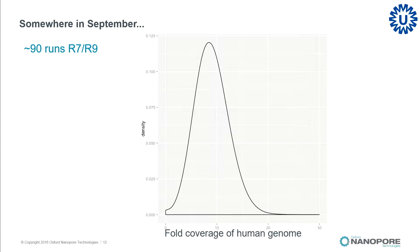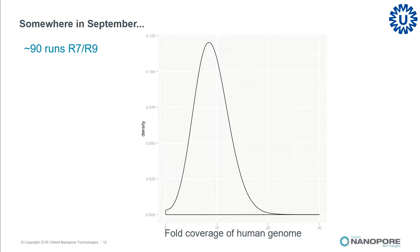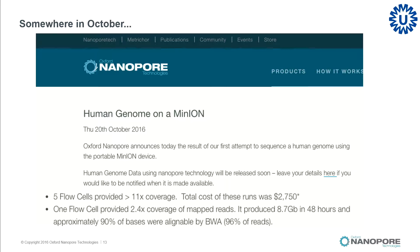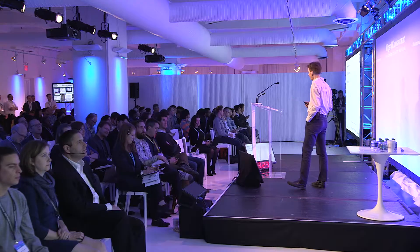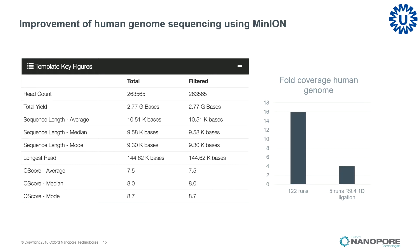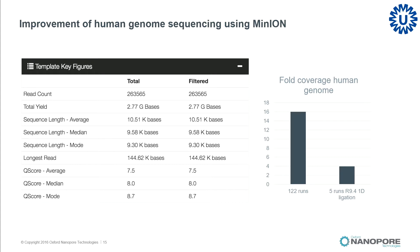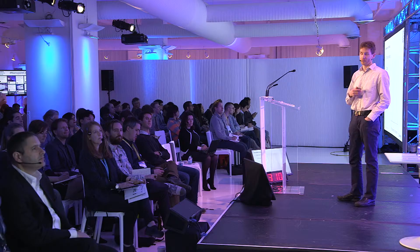Only a few weeks later, we saw an announcement on the website of ONT where they demonstrated more or less the same amount of data with only five runs — about 20x less than we had used — so I'm not sure whether we were really discouraged or encouraged by this. We went on doing some further sequencing using the R9.4 data and finally stopped sequencing around mid-November, where we had reached 16x coverage of this genome, and then thought it's time to do some meaningful analysis.